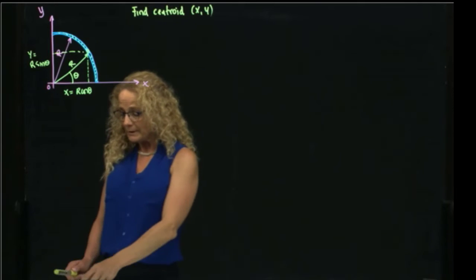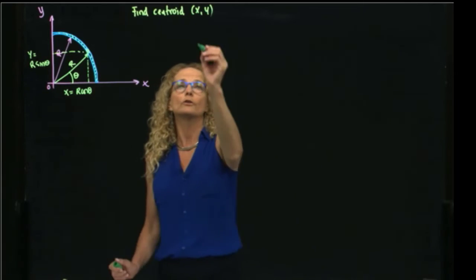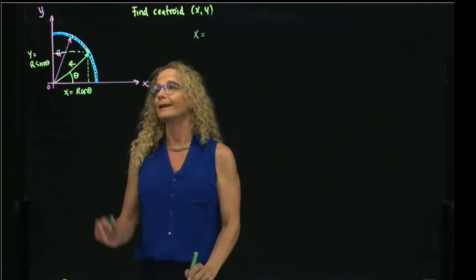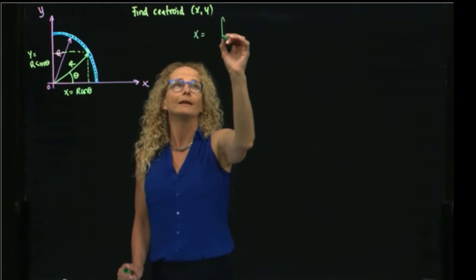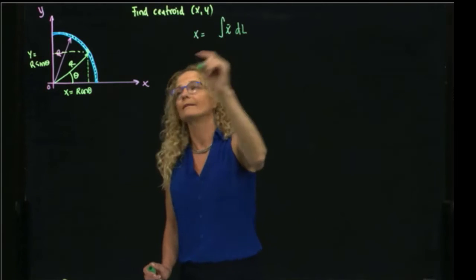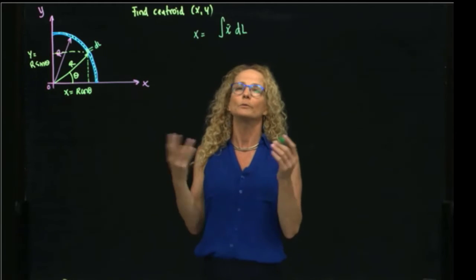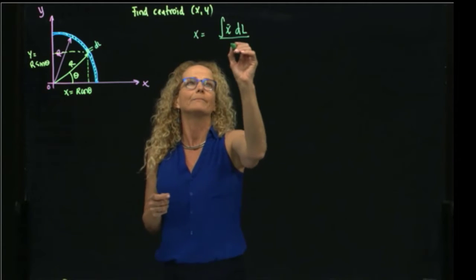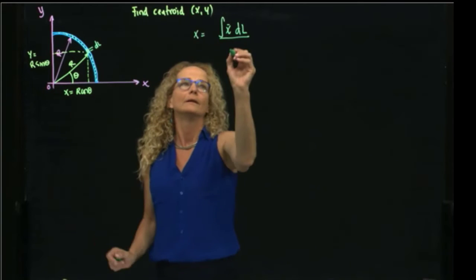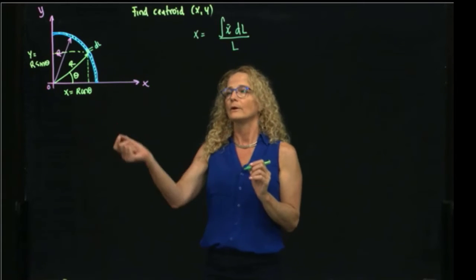The definition of centroid for a line will be equal to the integral of X dL, in this case, because we have a differential of linear distribution of the mass, divided by the total length of that.